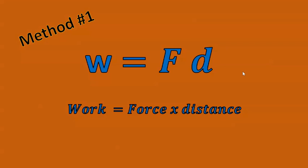Okay, method one is easiest. So when you have the right information, you can use this and find work very easily. Work is equal to force times distance. You just multiply those two numbers together if you have them.